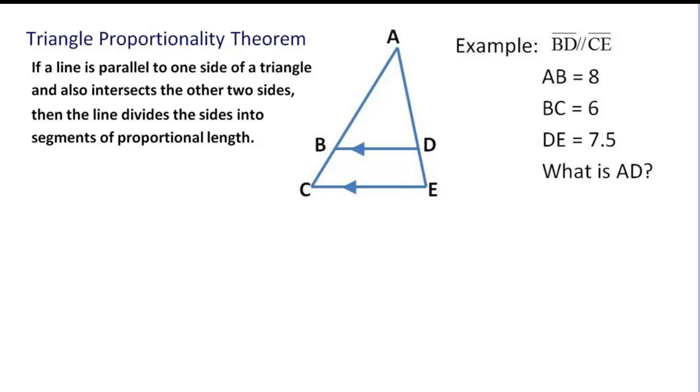On this page we still have the theorem written for your reference, but we're going to go through an example to illustrate what all this means. BD here is parallel to CE. Side AB is 8, I'm going to pencil that in. Side BC is 6. And side DE is 7.5.